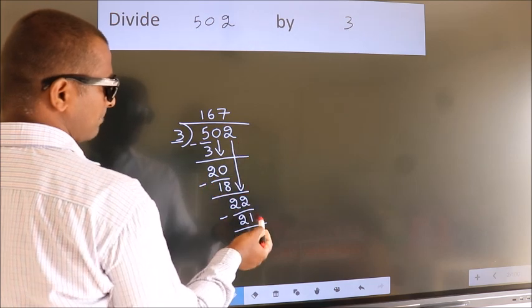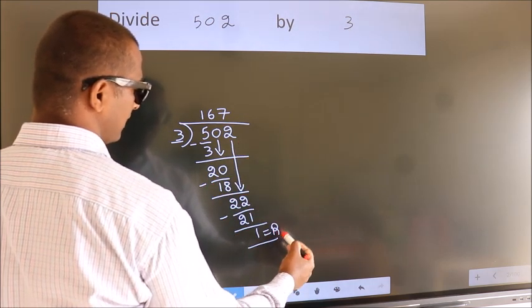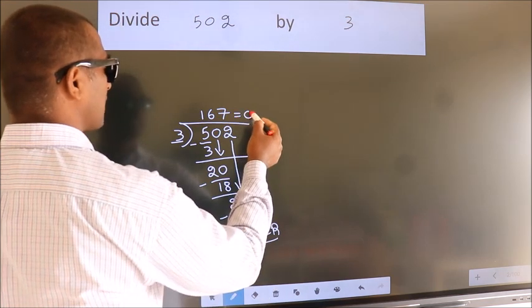No more numbers to bring it down. So we stop here. This is our remainder. This is our quotient.